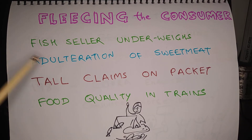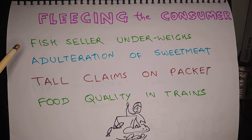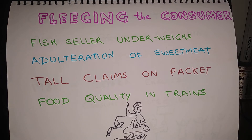If you go to buy fish from a fish seller, chances are the fish seller will underweigh the fish. So if you have bought one kilogram of fish, you may end up with maybe 900 grams or 800 grams of fish. The same problem of under-weighing happens with fruit sellers, vegetable sellers, and even at some kirana shops.